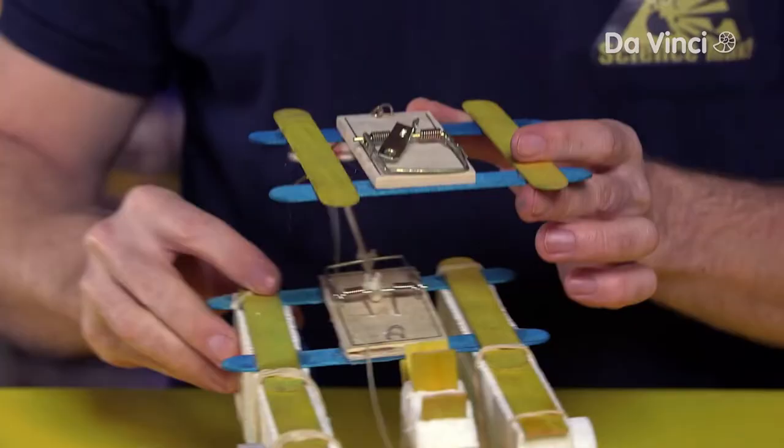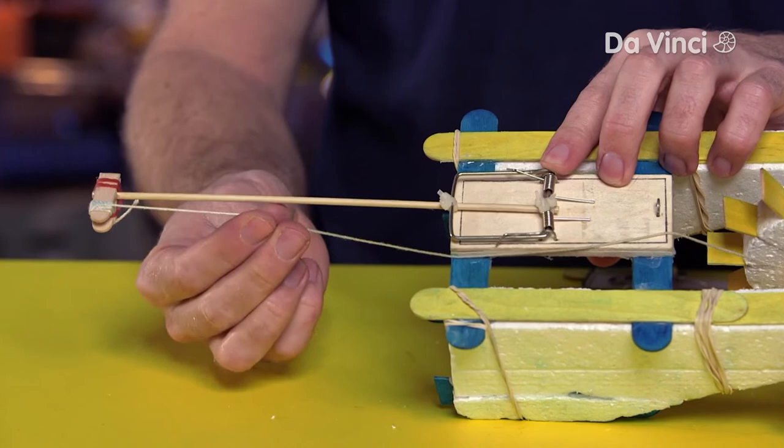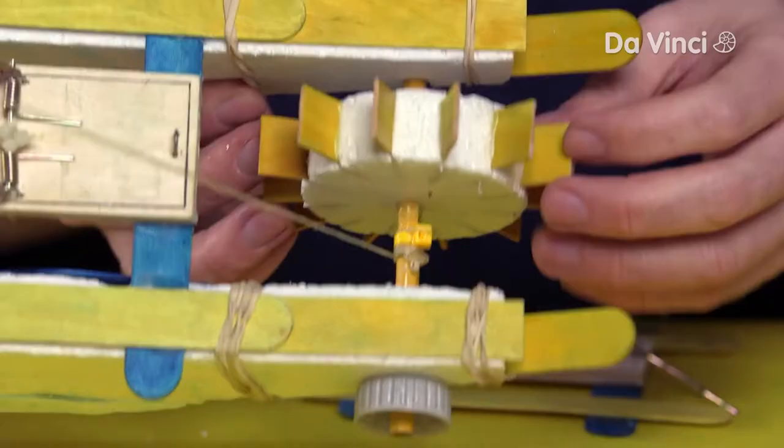Then attach the shish kebab skewer or a pencil to the mousetrap with zip ties. I like to put some craft sticks on the end to make it easier to tie the string to it. Wrap the other end around the paddle wheel pencil, and remember you need enough string so that your stick can lie flat.